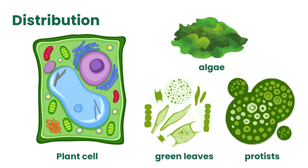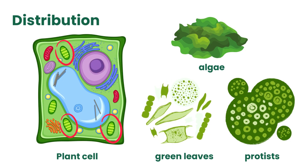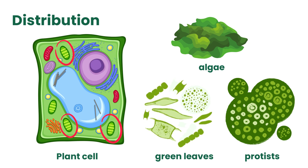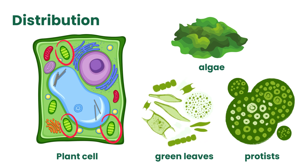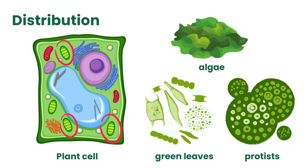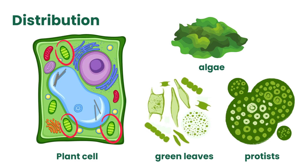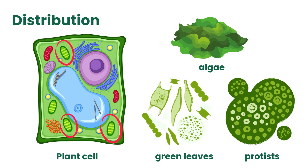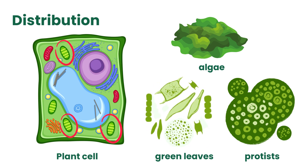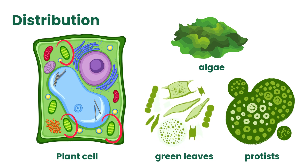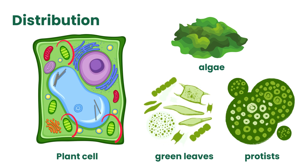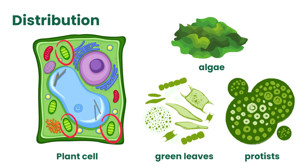Chloroplasts are found within the cytoplasm of plant cells, and they are predominantly situated within the cells of green plant tissues, notably in leaves, stems, and green fruit. Additionally, they can be found in algae and certain protists, where they fulfil a comparable role in the process of photosynthesis.